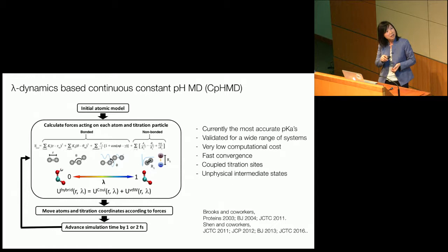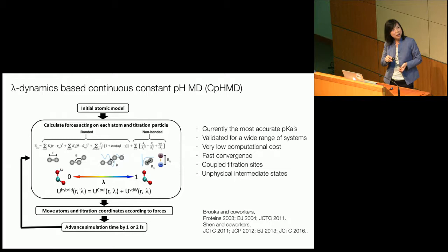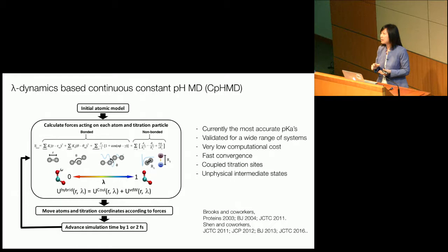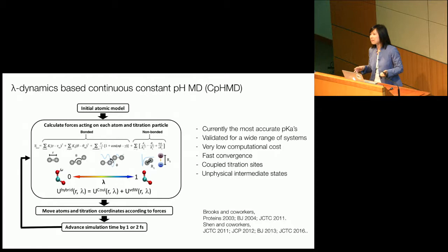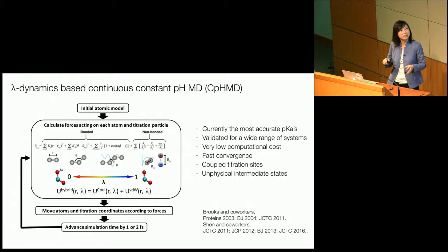Moreover, the convergence is very fast. We can deal with multiple titratable sites titrating at the same time in a similar pH range, and we rarely have a problem converging them. The only drawback currently is that we do have unphysical intermediate states. In order to facilitate the transition between protonated and deprotonated states, we have to go through intermediate lambda values, which correspond to unphysical states. But there are ways to suppress them — we use a simple harmonic potential to keep them under 20% in our simulations.